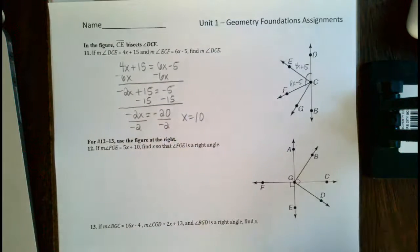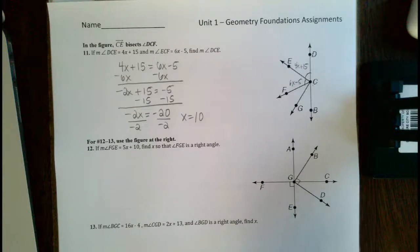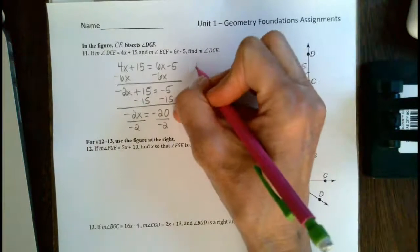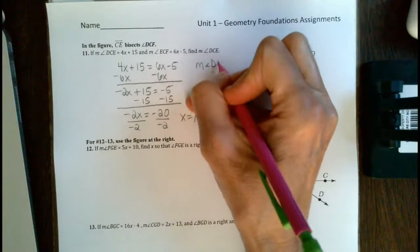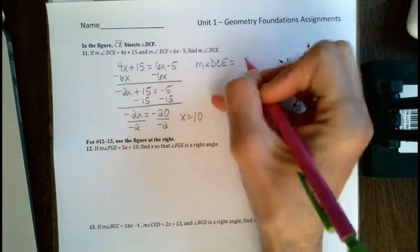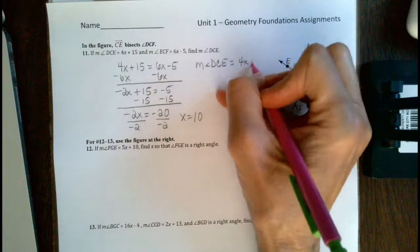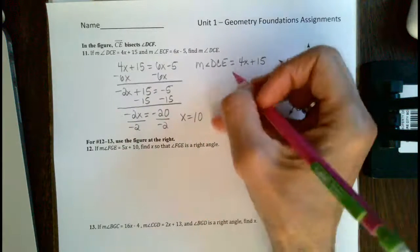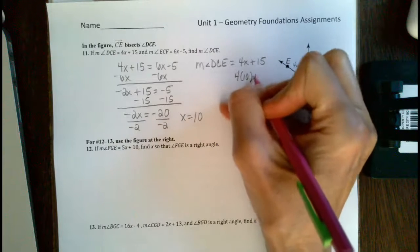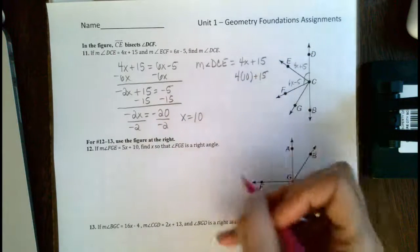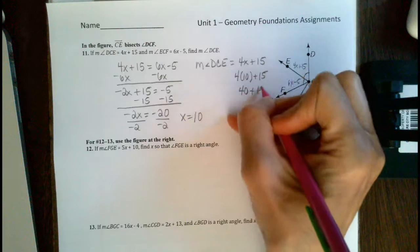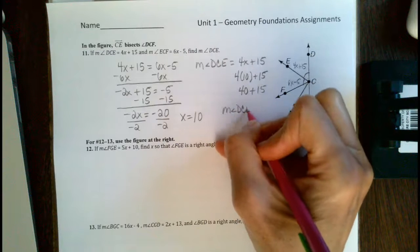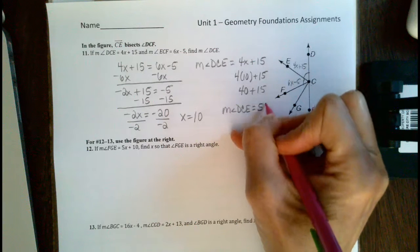Now we don't really care that x equals 10. What we want to know is how big is angle DCE. Well the measure of angle DCE is 4x plus 15, but we're going to take the value of 10 that we just found and put it back in here. It's 4 times 10 plus 15, which is 40 plus 15. So our measure of angle DCE is 55.